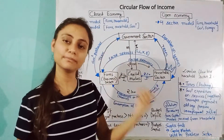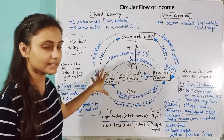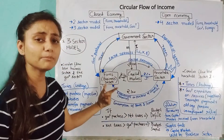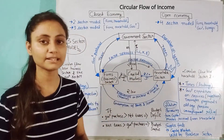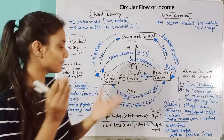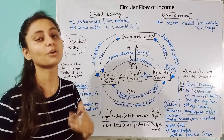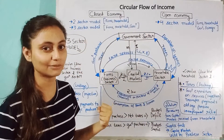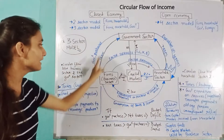The government receives taxes from both the business sector and the household sector. The government also purchases goods and services from the business sector for its own consumption — just like the household sector does. When the government collects taxes, money is taken out of the circular flow. We call this leakage. The circular flow between the business sector and the government sector involves leakage through taxes.